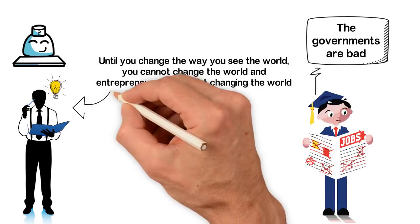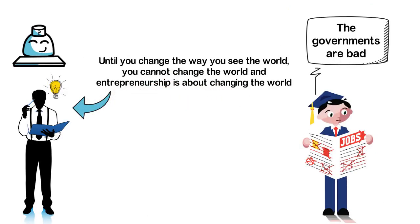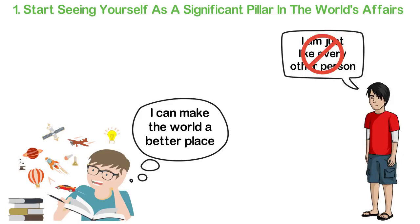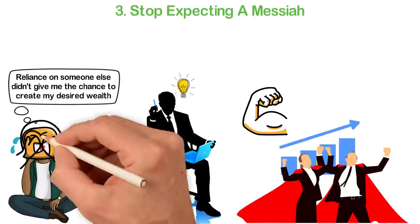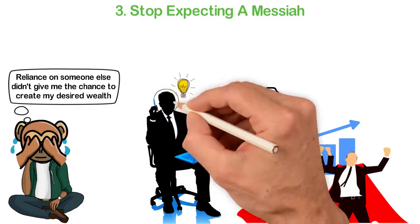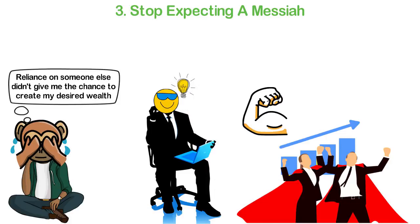In summary, the first thing to do when starting a business isn't to look for the capital or an office building. The very first thing you have to do is to change your worldview. You have to change the way you see yourself in relation to the way you see the world. You have to stop seeing yourself as a victim. You have to start seeing yourself as a victor, a messiah, someone who can challenge and change things, someone who the world needs for important progress and advancement.